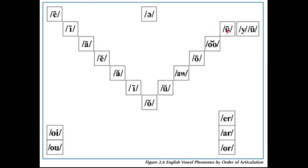One other thing to notice on here is we have two different kinds of long U sounds, which you could get into and get nitpicky with your students, but depending on where they are and their levels, you don't really need to. For example, in the word moon, you just hear the pure U. But then in unicorn or few, you hear that Y before the long U. Those are just some things to think about when you look at the vowel valley.